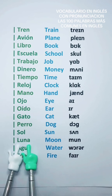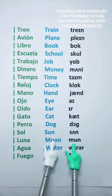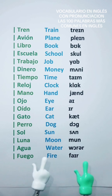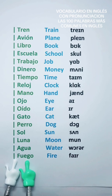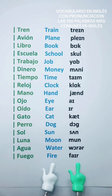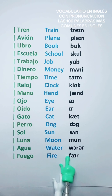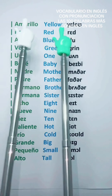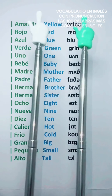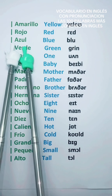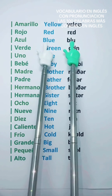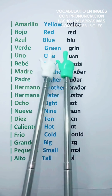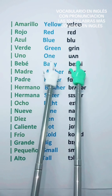Sol — Sun. Luna — Moon. Agua — Water. Fuego — Fire. Amarillo — Yellow. Rojo — Red. Azul — Blue. Verde — Green. Uno — One.